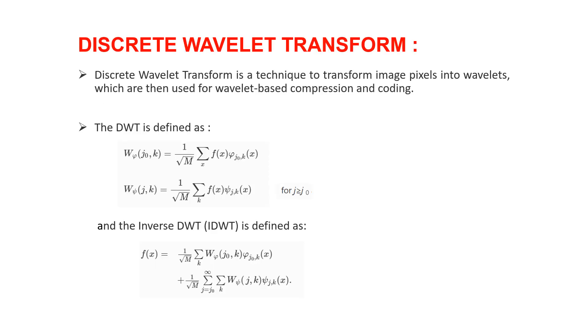Discrete Wavelet transform is a technique to transform image pixels into Wavelets which are then used for Wavelet based compression and coding.